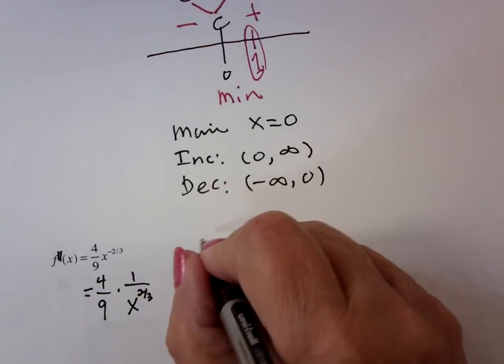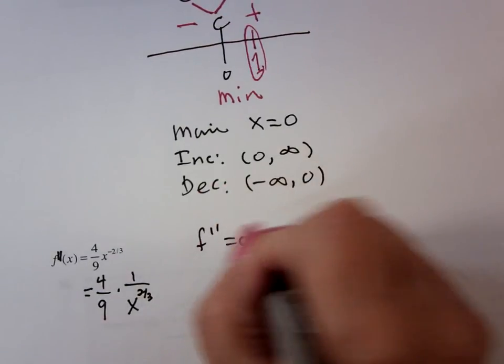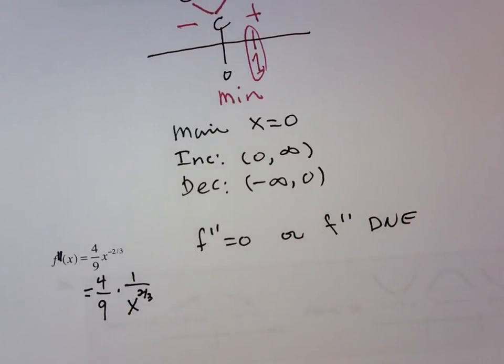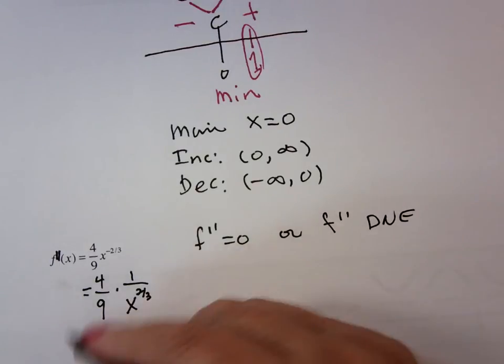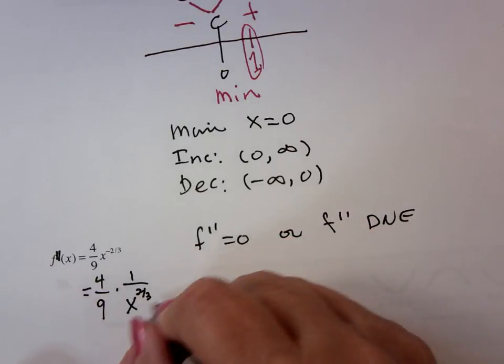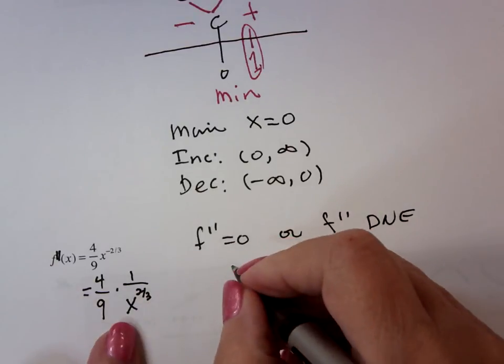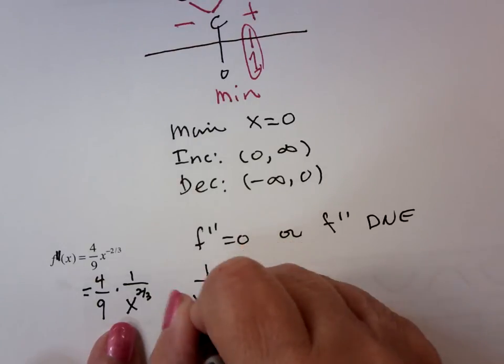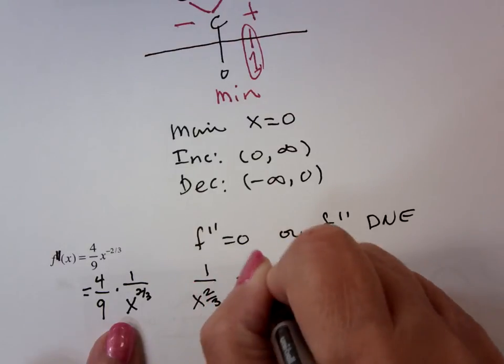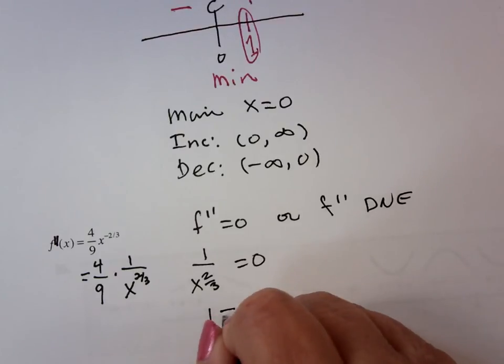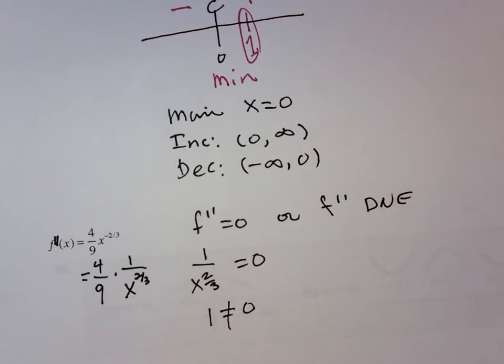So that I want to know where f double prime equals zero or f double prime does not exist. Well, this is where when you come right down to four-ninths again, it's not going to be an issue because I just have one over x to the two-thirds power. So this would say I'd have one over x to the two-thirds equaling zero. The only way that could be zero is if the numerator is zero. Well, one can never equal zero. So there are none.